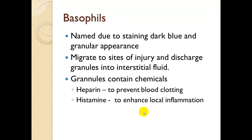Basophils are named due to their dark blue staining and granular appearance. They migrate to sites of injury and discharge granules containing heparin and histamine into the interstitial fluid. Histamine causes vasodilation, which keeps pathogens from traveling through a pressurized vessel system. This also creates problems during anaphylaxis — when basophils release histamine on a very large scale, it can cause massive vasodilation, resulting in anaphylactic shock. Heparin prevents blood clotting, keeping pathogens exposed so antibodies and white blood cells can reach them.